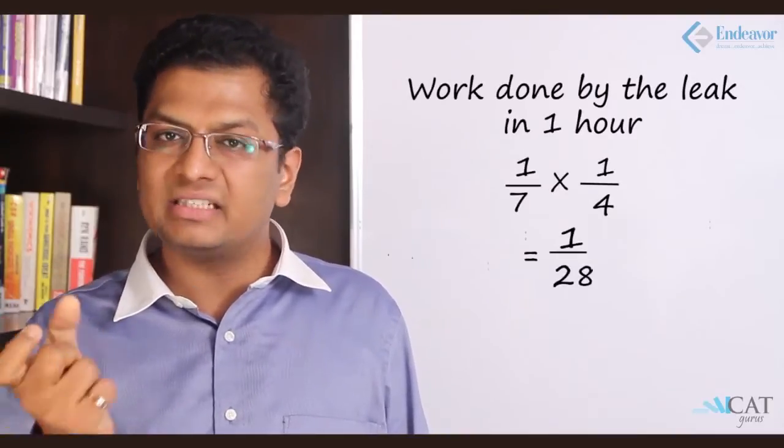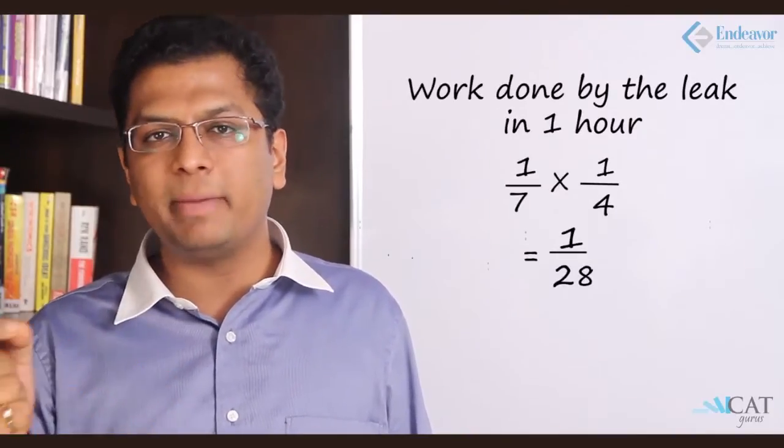Let's take the second case if there is a leakage. If there is a leakage it takes 4 hours. So in one hour how much work will be done? 1 by 4. So the difference of these two will give us the work done by the leakage. Let's see, 2 by 7 minus 1 by 4, that difference is nothing but 1 by 28.